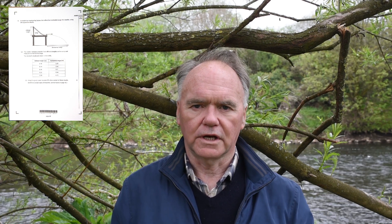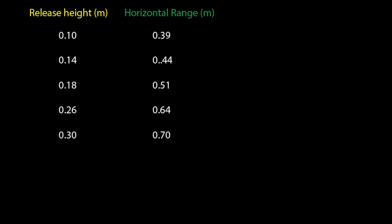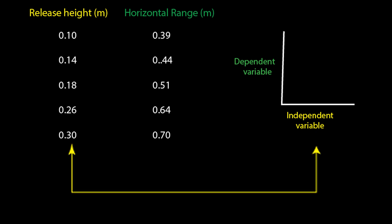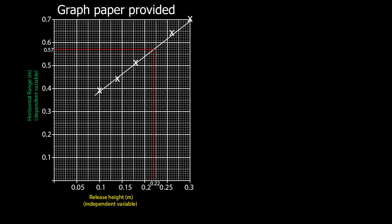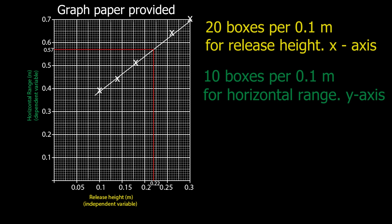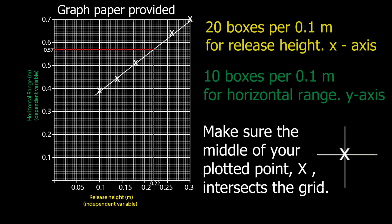The second question asks us to draw a graph. The first thing we do with graphs is identify the independent variable and the dependent variable. The independent variable is normally drawn on the left of the table — in this case it's release height. The dependent variable depends on the release height and we plot that on the y-axis, the vertical axis. With this graph paper, the best graph taking up most of the paper will occupy 20 boxes for a tenth of a metre on the horizontal axis and 10 boxes for a tenth of a metre on the vertical axis. We then plot our points as carefully as possible, and find the horizontal range for a release height of 22 centimetres (0.22 m).